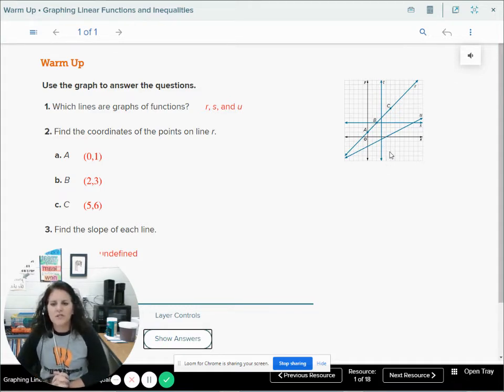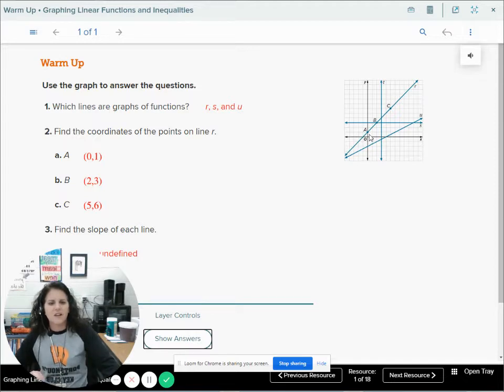Find the coordinates of the points on line R. A is found at 0, 1. B is found, we go over 2, up 1, 2, 3. So 2, 3. And C is at 2, 3, 4, 5. 5, comma, 1, 2, 3, 4, 5, 6.